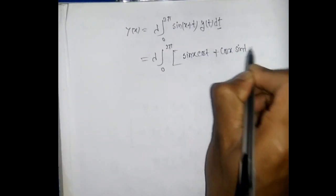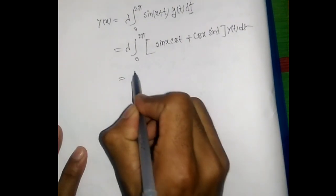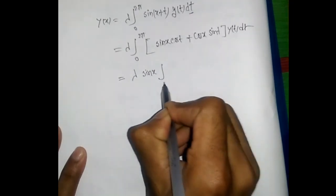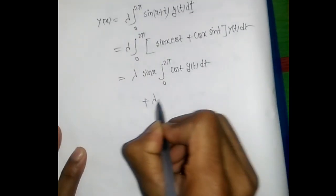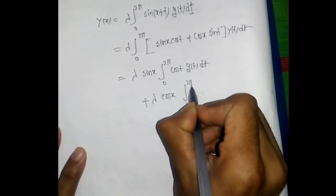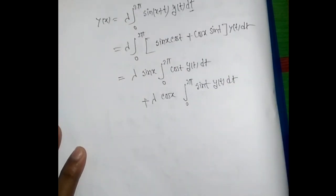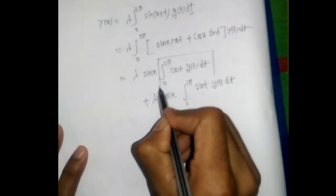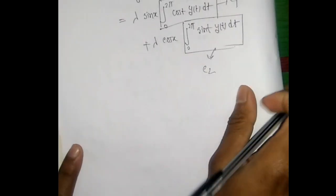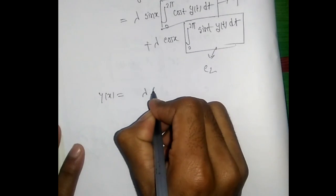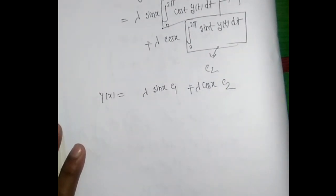Now we solve number one: y(x) = λ ∫₀²π sin(x+t) y(t) dt. Expanding sin(x+t) = sin x cos t + cos x sin t, this becomes λ sin x ∫₀²π cos t · y(t) dt + λ cos x ∫₀²π sin t · y(t) dt. We define C₁ = ∫₀²π cos t · y(t) dt and C₂ = ∫₀²π sin t · y(t) dt, so y(x) = λ C₁ sin x + λ C₂ cos x.